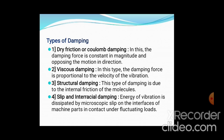The fourth type is slip or interfacial damping. Here, the energy of vibration is dissipated by means of microscopic slip on the interfaces of different parts which are in contact and under fluctuating loads. Different parts under fluctuating loads dissipate some energy, and this damping is known as slip or interfacial damping.